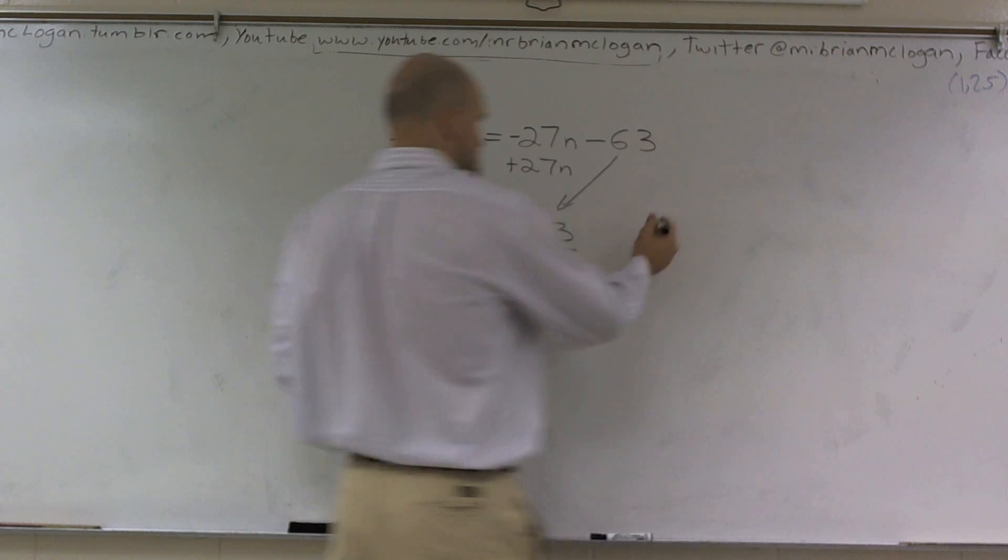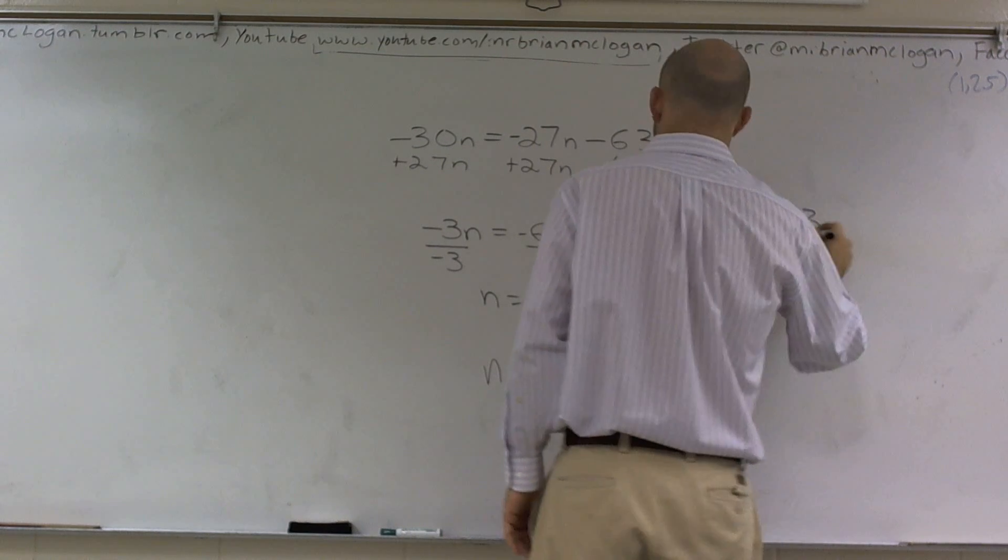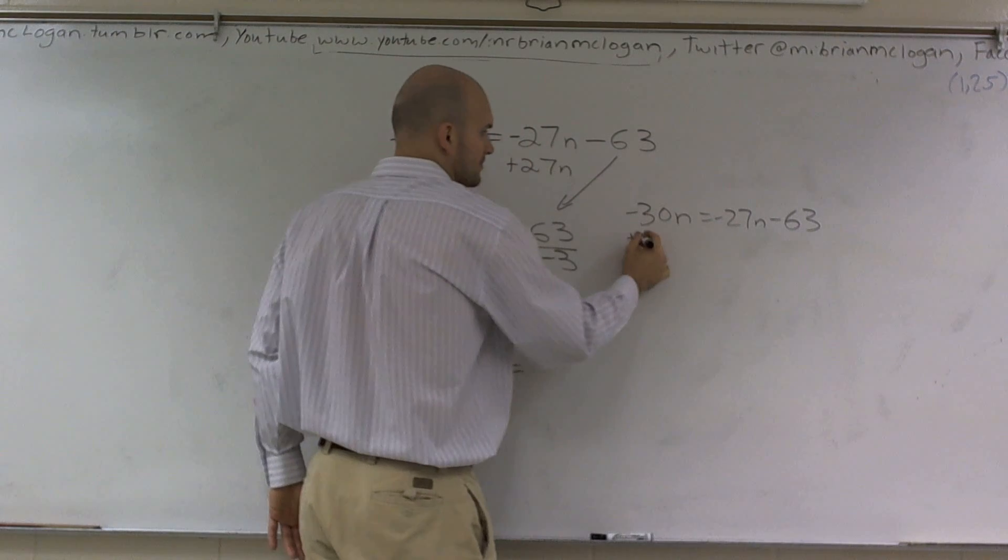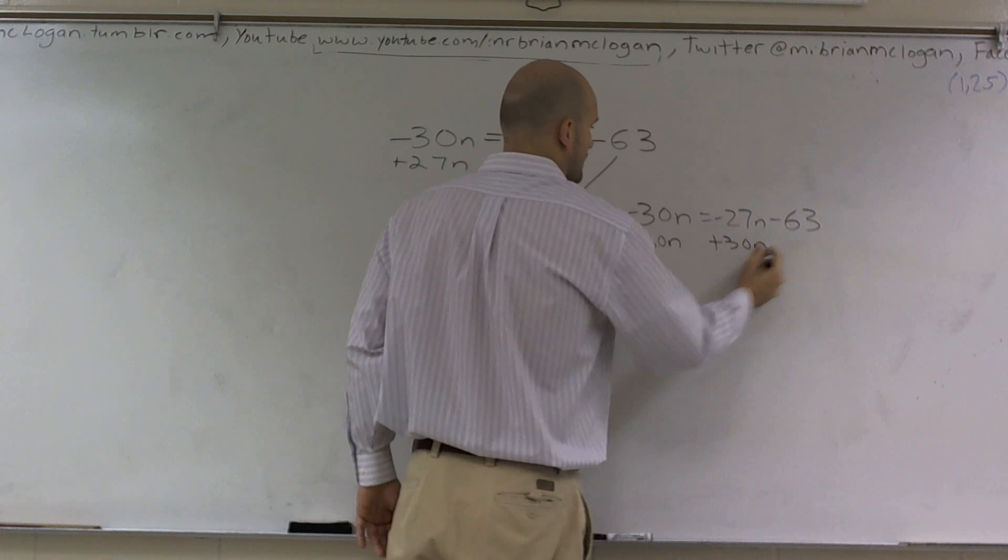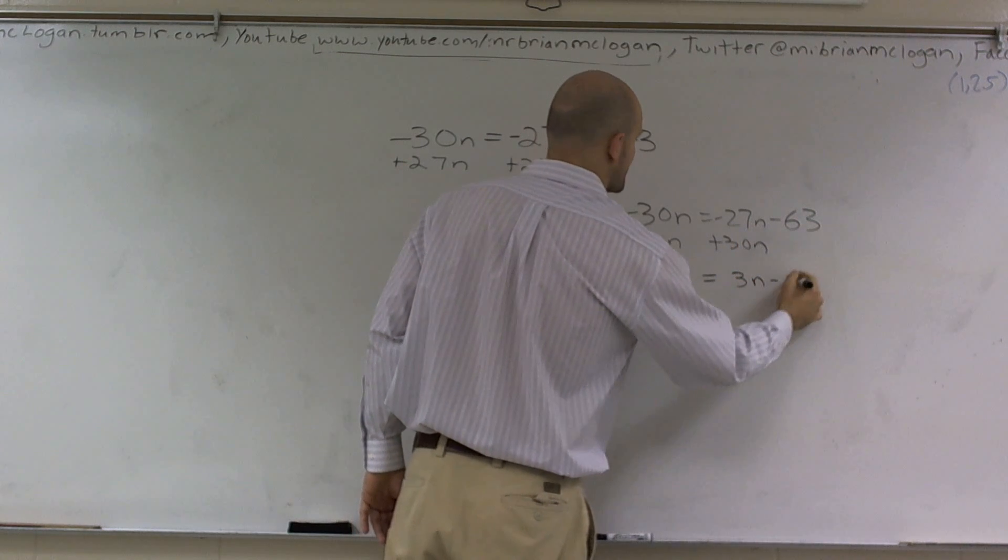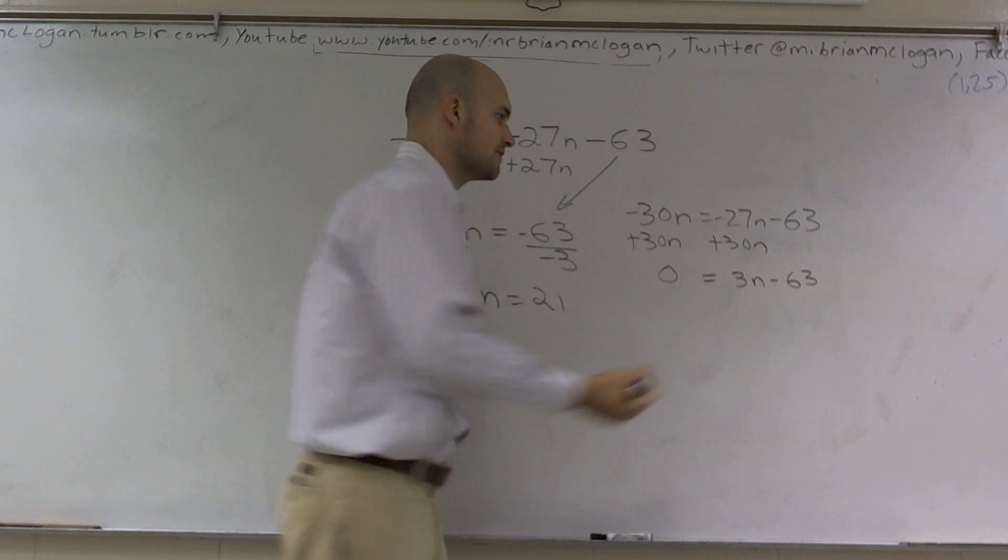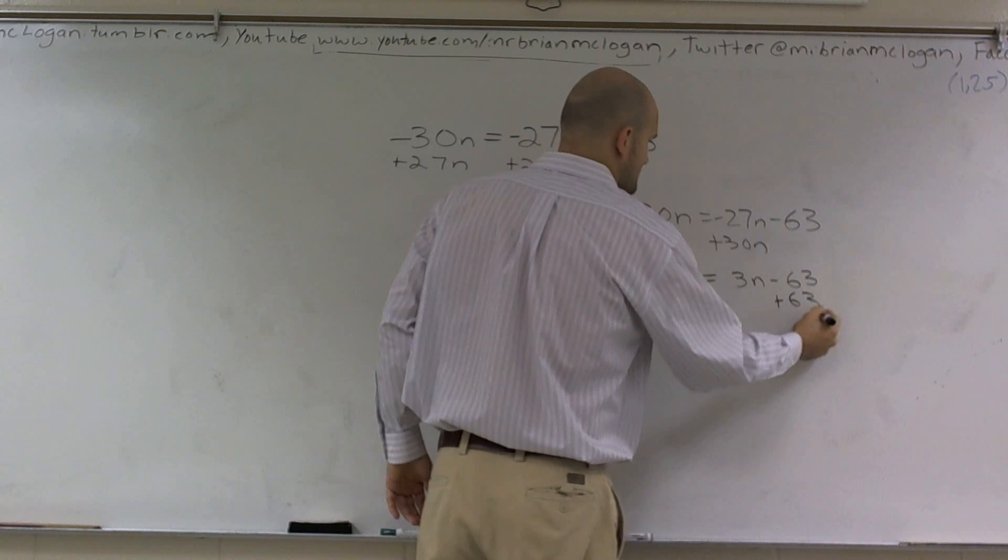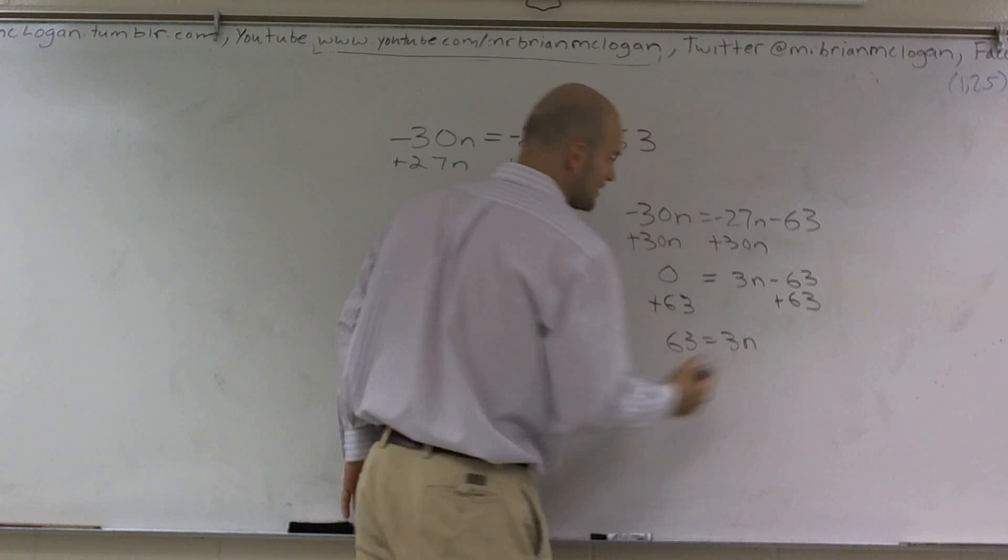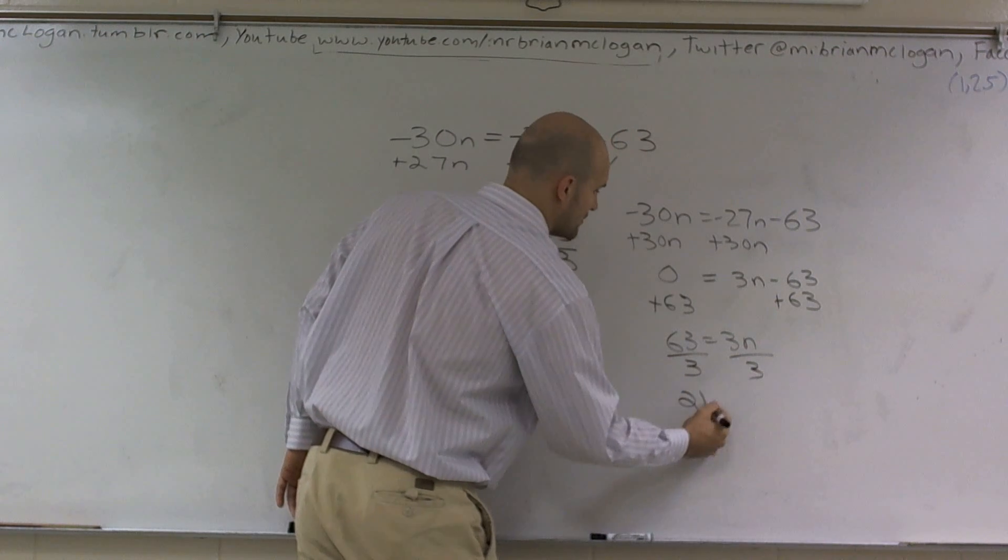Let's just pretend for those of you that wanted to do it the other way. If you want to get rid of the 30n, you add 30n. What you get is 0 equals 3n minus 63. We'd still have to get our n by itself. I can add 63 to get rid of that with the n, so I have 63 equals 3n. Then I can divide by 3 and I get 21 equals n.